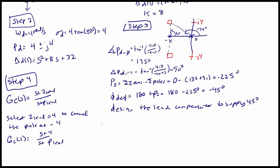And now we need to find our new angle deficiency. So it's going to be the angle from P lead to our desired pole. So this is going to be the arc tangent of 4 minus 0 over negative 4 minus negative P lead.